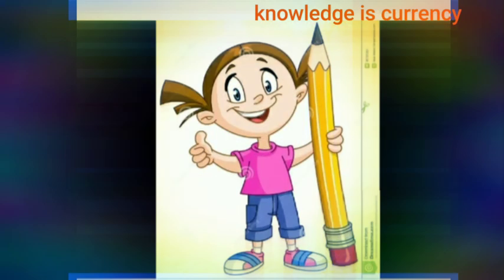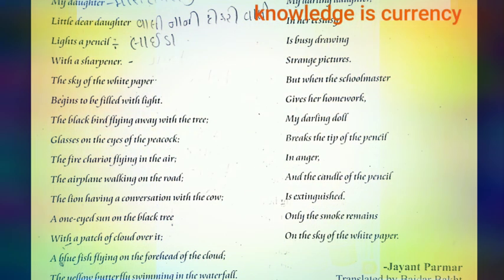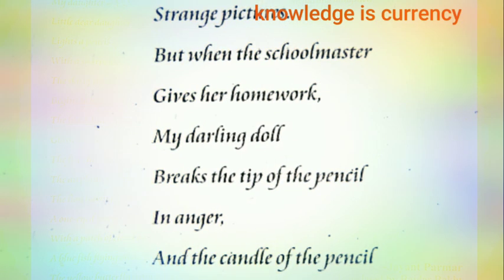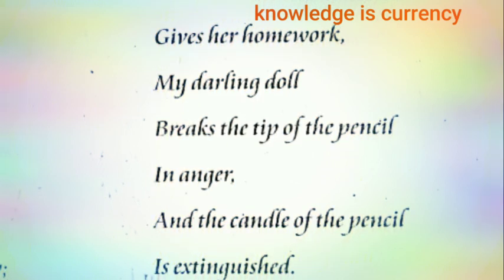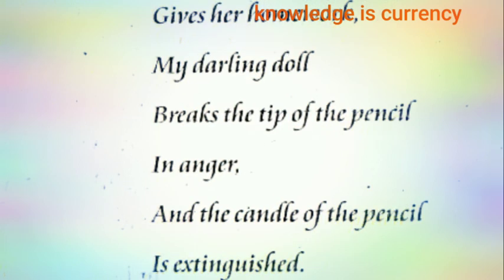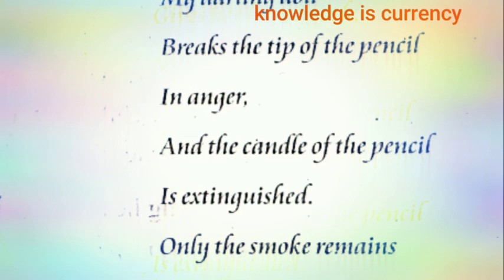Lekin jaise humne jis picture ko dekha — my darling doll Mary, my darling doll is Mary — break the tip of the pencil — pencil ki jo tip hai, jo nok hai — softener se use jail it or chill ke rakha, use kya kata — todeti hai in anger, gusse mein se todeti hai.